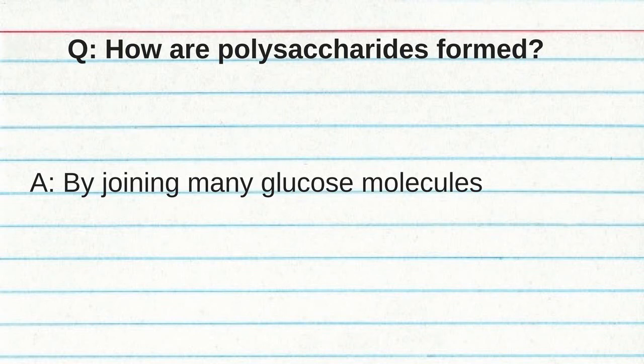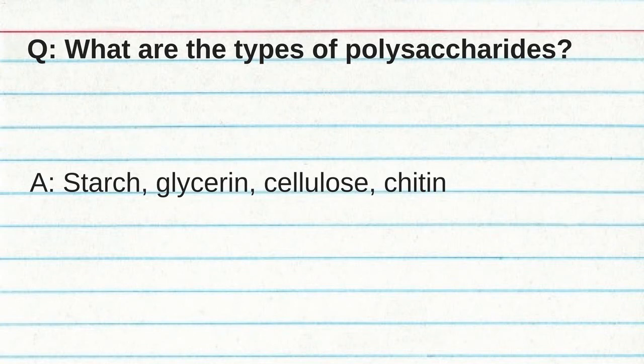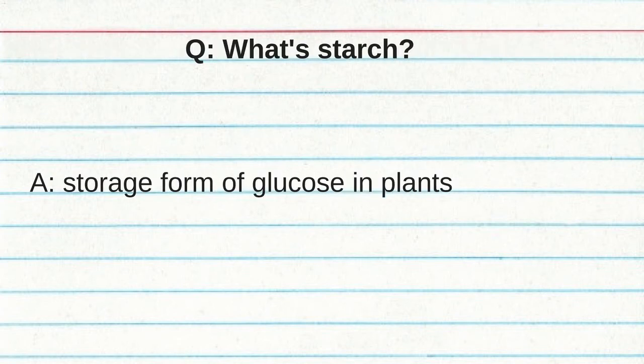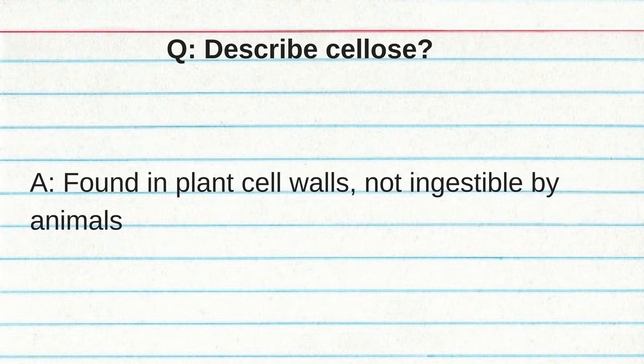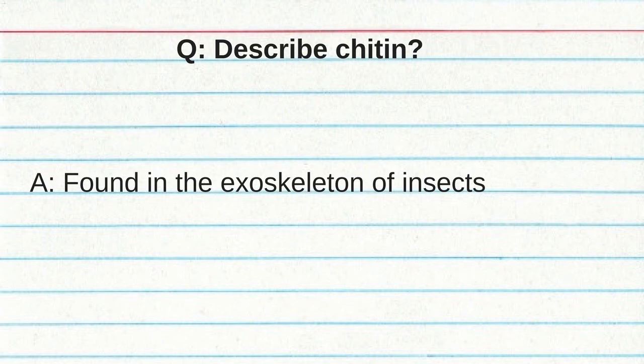How are polysaccharides formed? By joining many glucose molecules. What are the types of polysaccharides? Starch, glycogen, cellulose, and chitin. Starch is the storage form of glucose in plants. Glycogen is the storage form of glucose in animal muscle and liver cells. Cellulose is found in plant cell walls and is not digestible by animals. Chitin is found in the exoskeleton of insects.